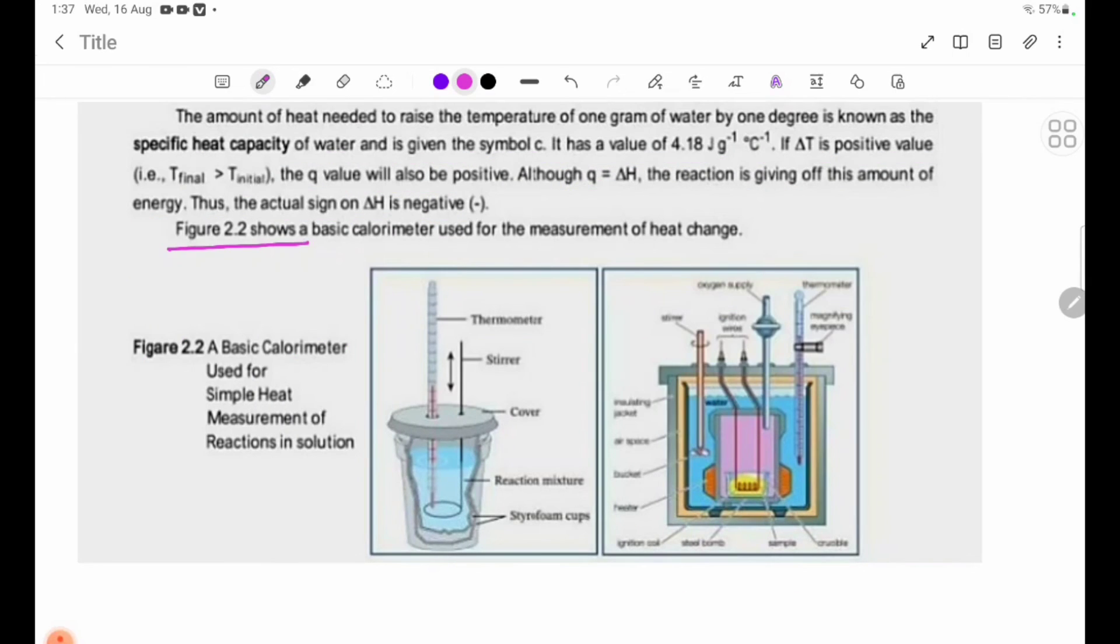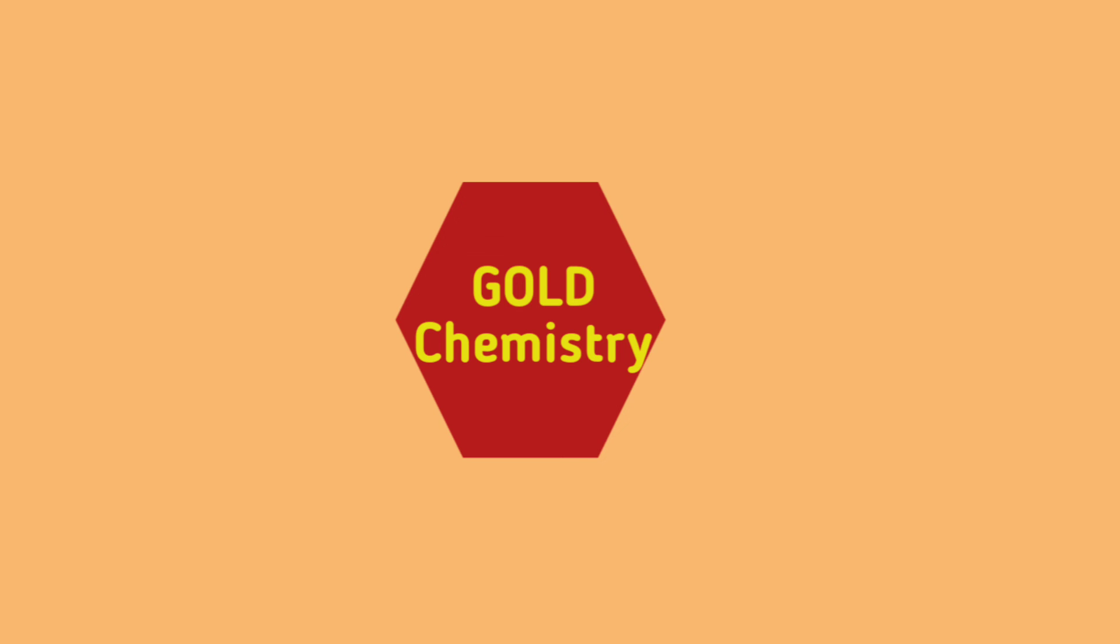Figure 2.2 shows a basic calorimeter used for the measurement of heat change. The figure shows components including a thermometer, stirrer, and styrofoam cups nested together.